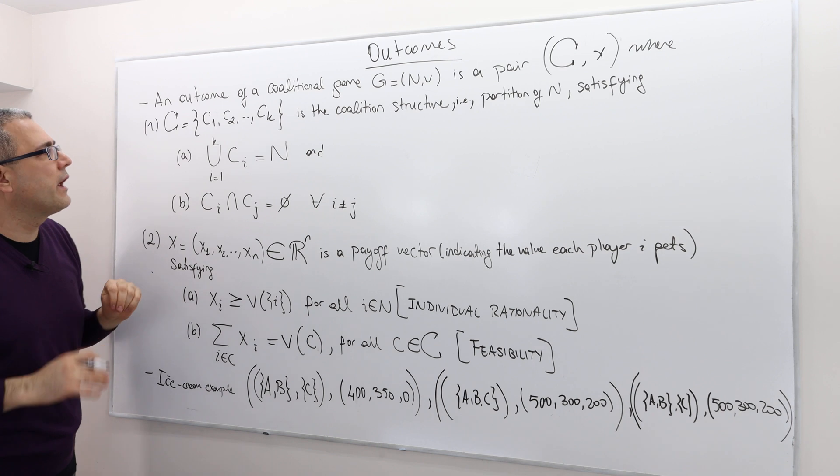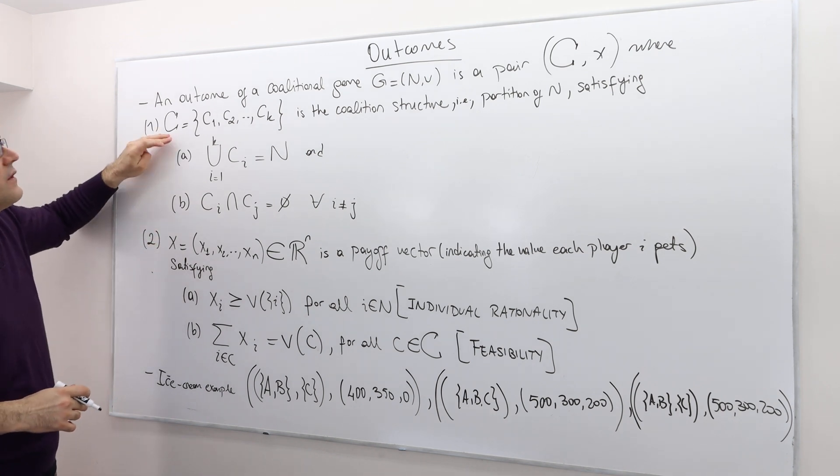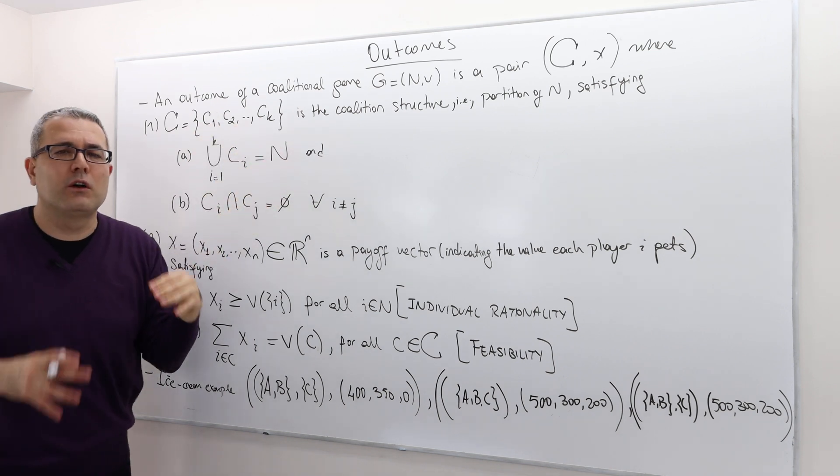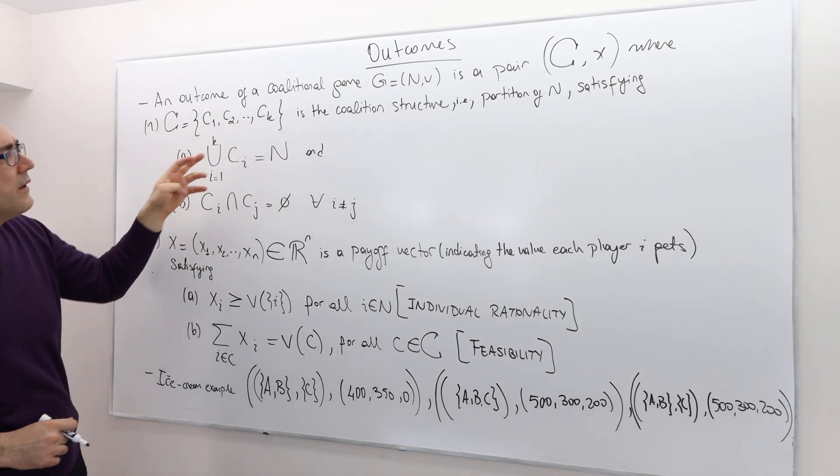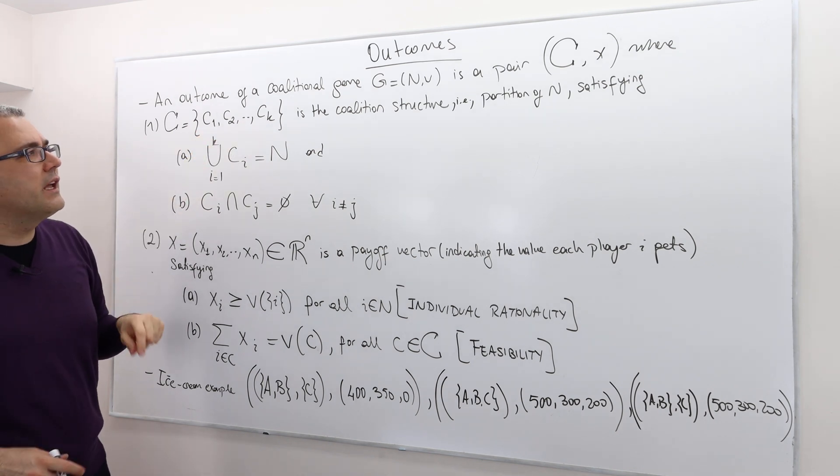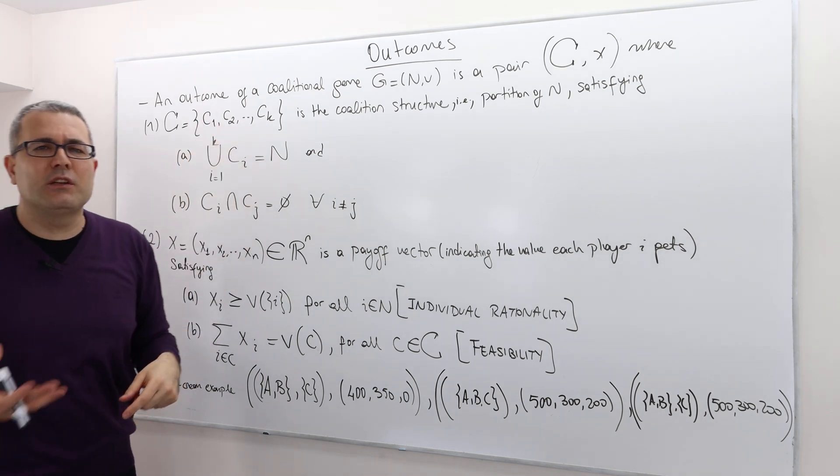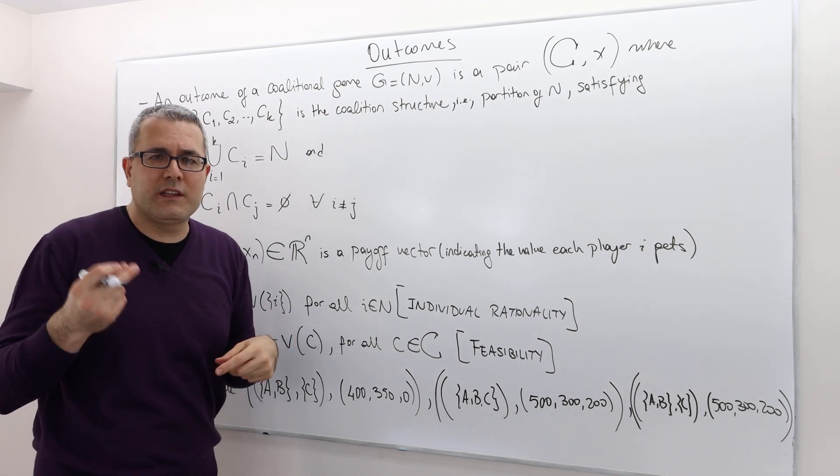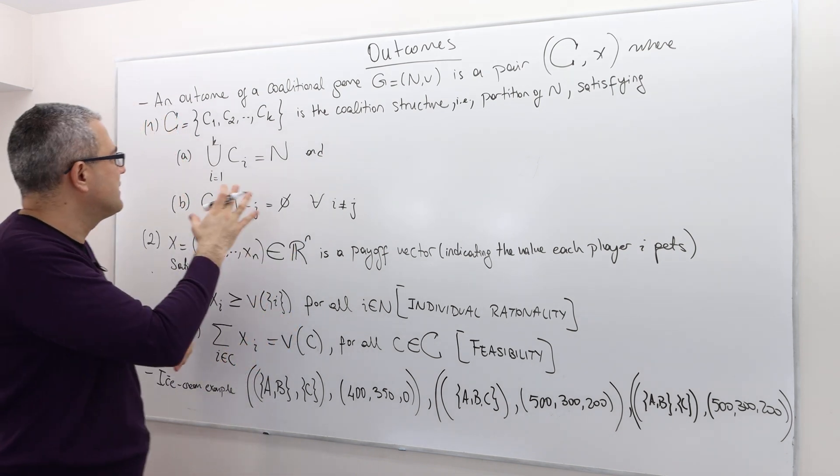All right, well what are they? Well C, this capital C, is actually a collection of coalitions. We call it coalition structure. So C1, C2, up to CK. So it's basically a partition of the set of players. Well what does it mean, a partition? Well it says the following.